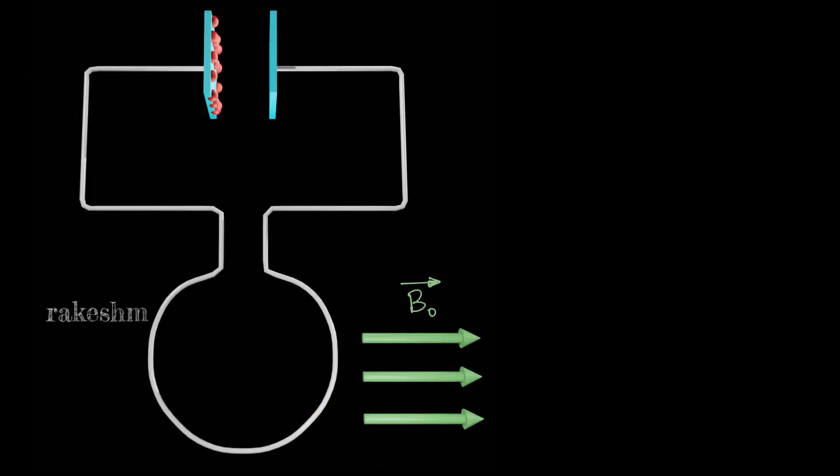Let us now understand how this coil gains angular momentum. First we close the switch and the capacitor starts getting discharged. As current flows in the coil, this coil acquires a magnetic moment. The vector pointing out of the plane is M⃗, the magnetic moment acquired by this coil.